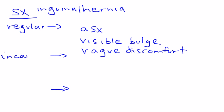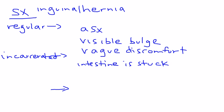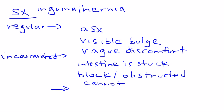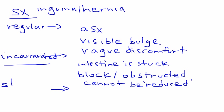The next level is an incarcerated hernia, which means the intestine is stuck. If the intestine is stuck it can lead to obstruction, and the hernia can no longer be reduced. Reduction simply means being able to push the hernia back in with a finger. If it's incarcerated, it cannot be reduced — that is a very distinct sign of an incarcerated hernia.